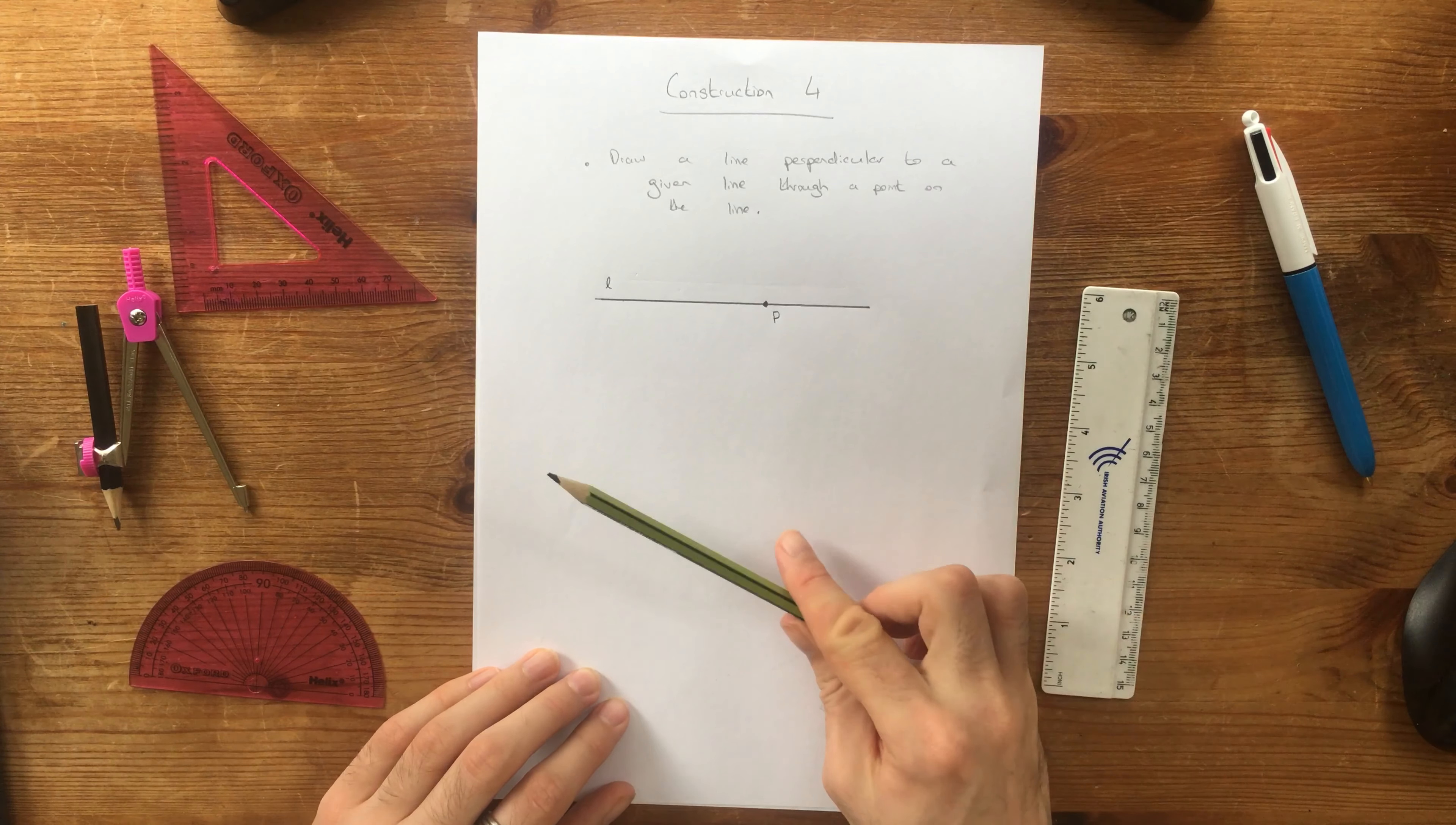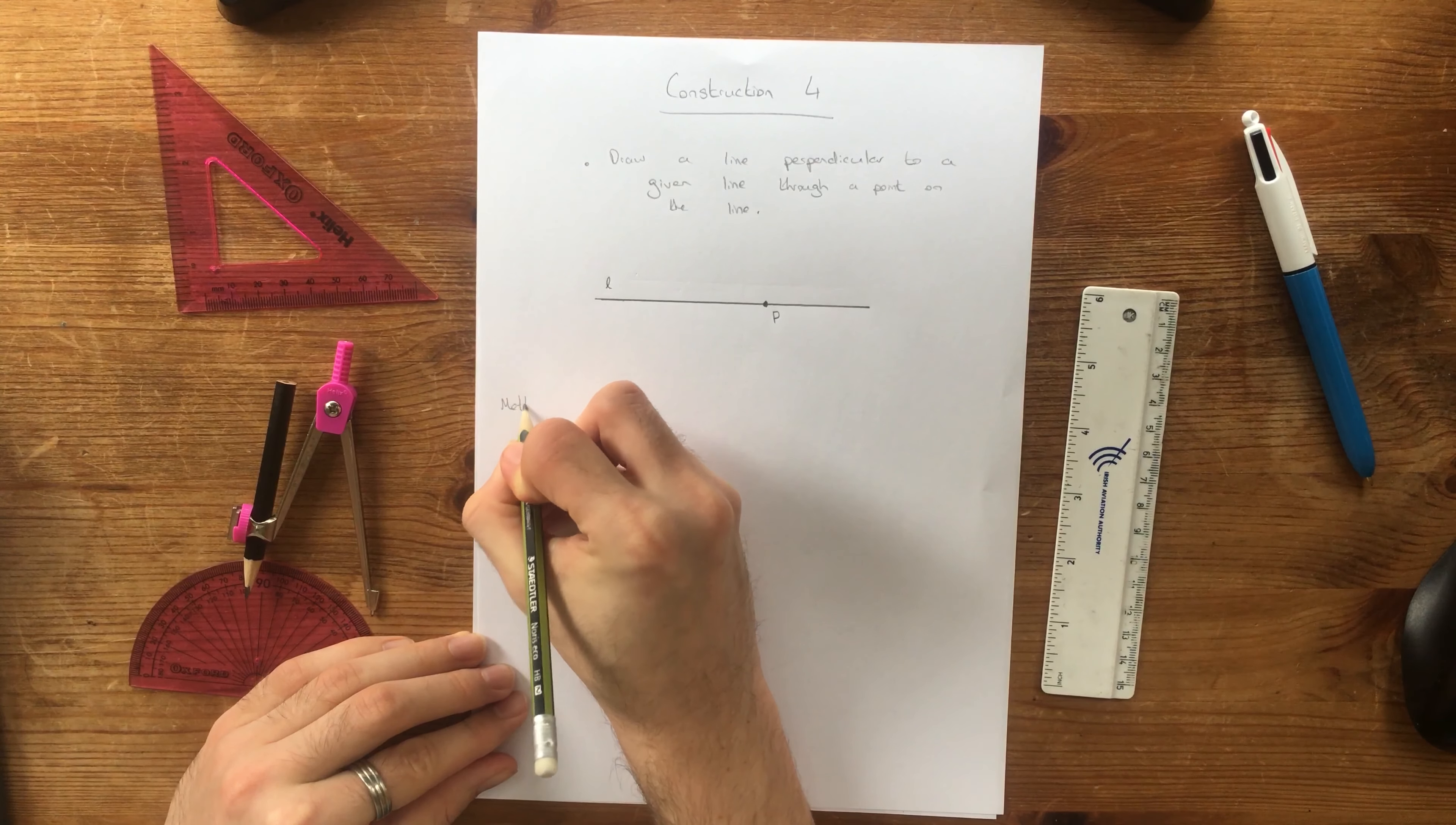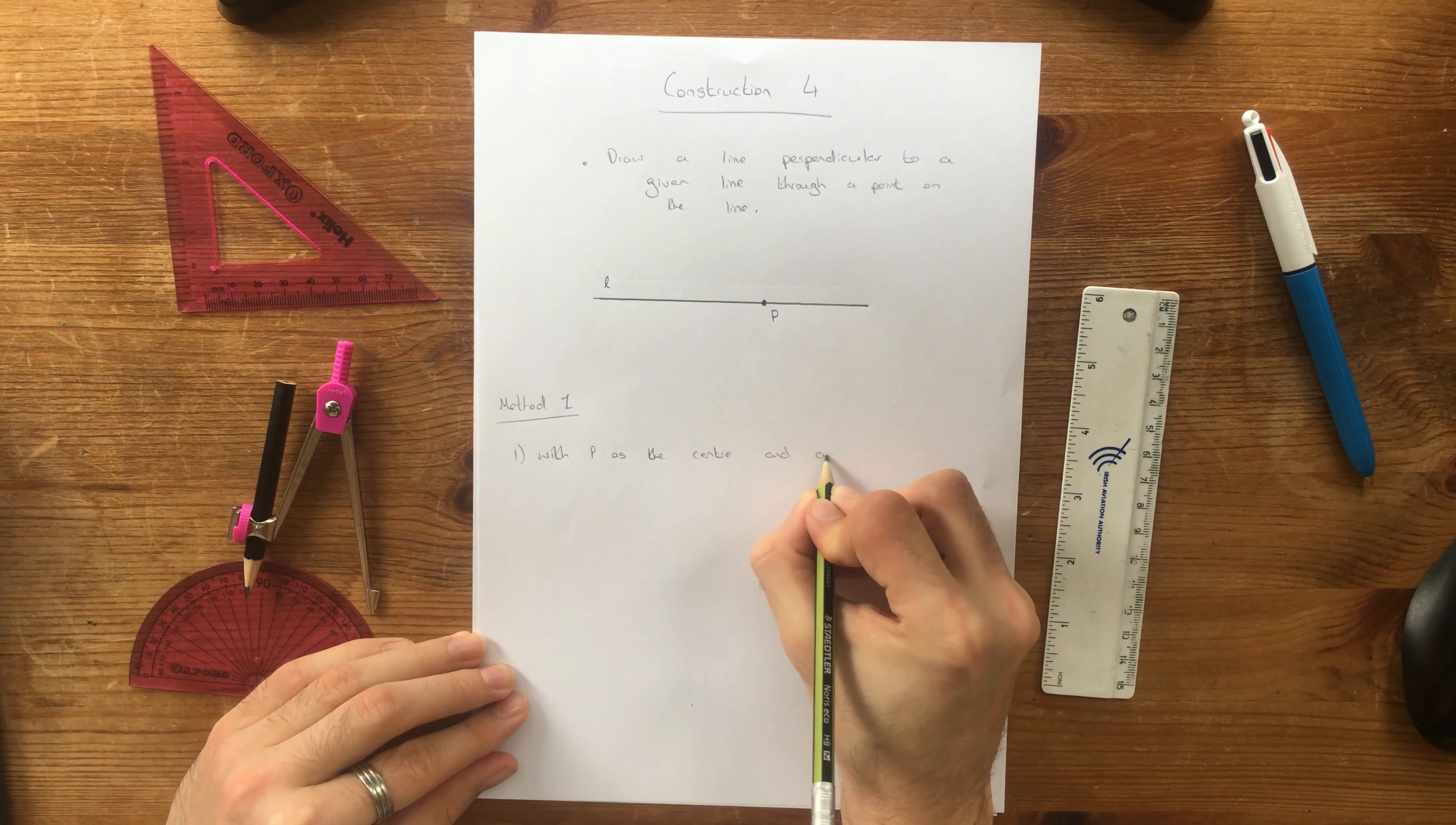So first of all, with P as our center, so that's our first step. With P, and remember this is method one, method one. With P as the center, and any radius.